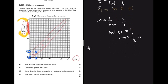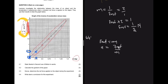Question 4.4 asks for a conclusion. From F_net = ma, acceleration is inversely proportional to mass. From the graph, as mass increases, 1/a increases — so 1/a is directly proportional to the mass of the object.